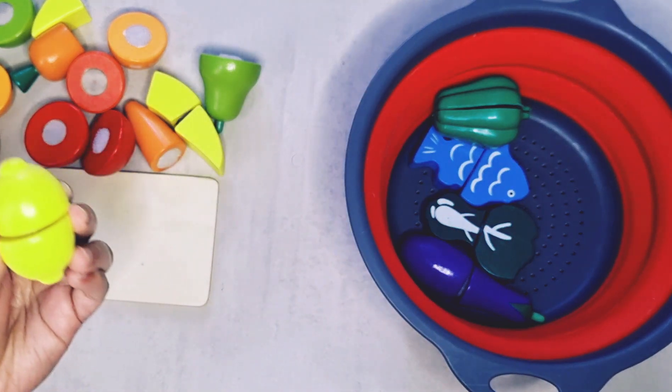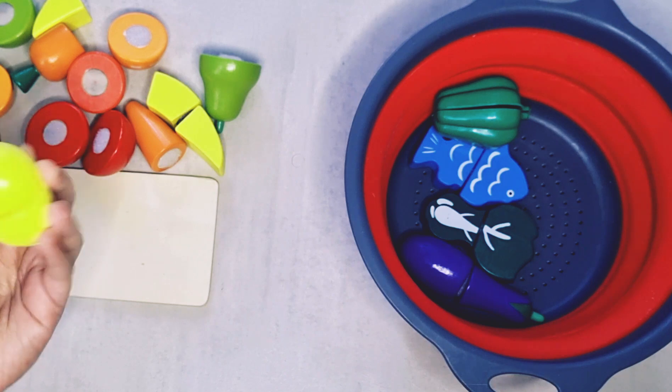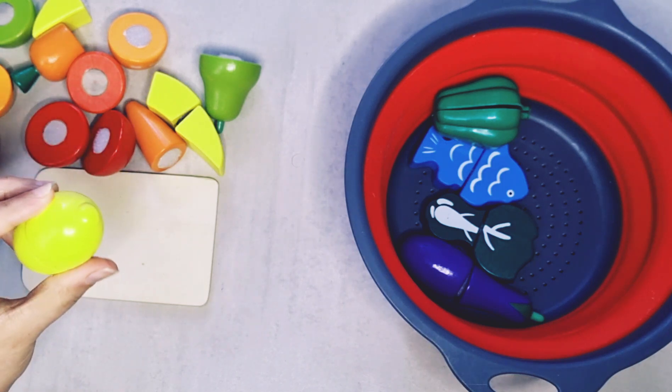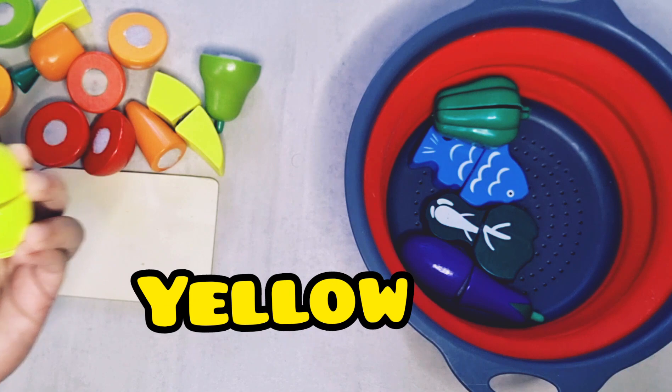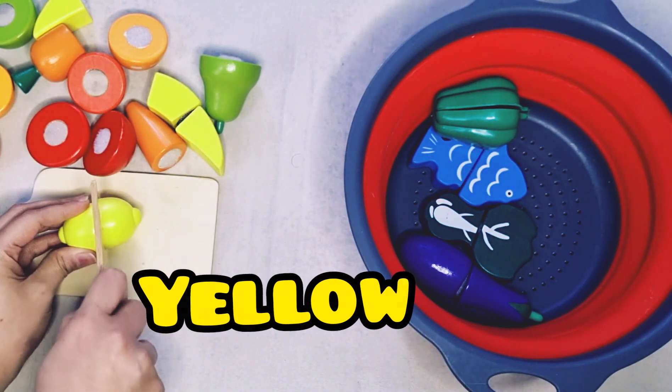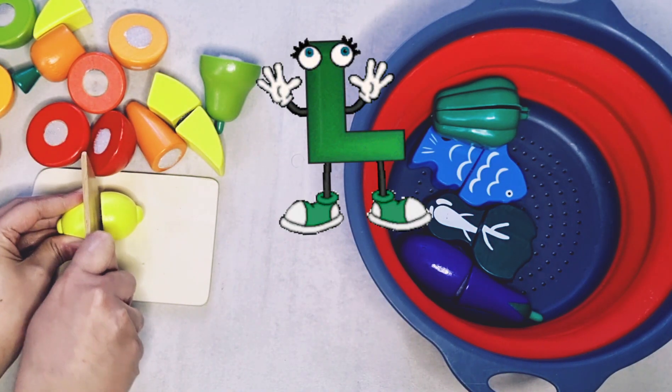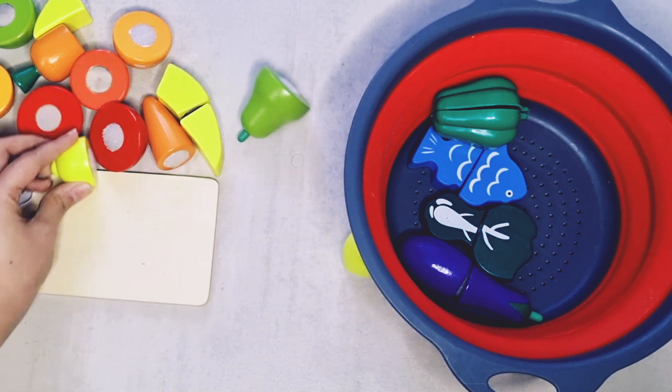This small little thing is a lemon. Lemon is yellow in color and it starts with the letter L. Well, let's cut the lemon. There you go.